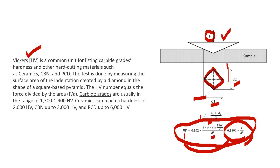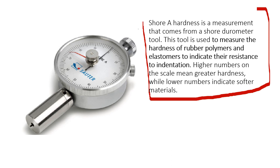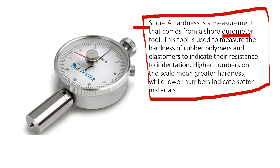For Shore hardness we use a durometer, which is used for rubber. If you work in industrial sectors you may see expansion bellows, which are rubber components. To check the hardness of expansion bellows we use a durometer. Shore A hardness is the measurement from the Shore durometer tool, used to measure the hardness of rubber, polymers, and elastomers — indicating resistance to indentation. A higher number means greater hardness, but higher hardness also means more brittleness.